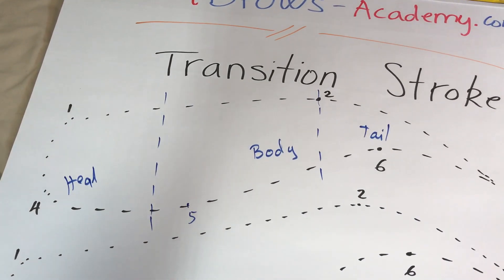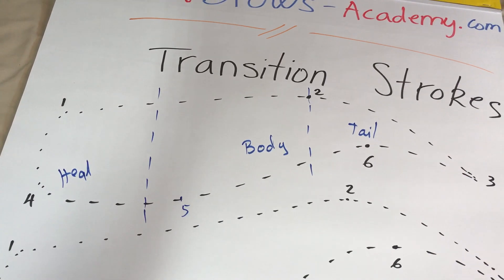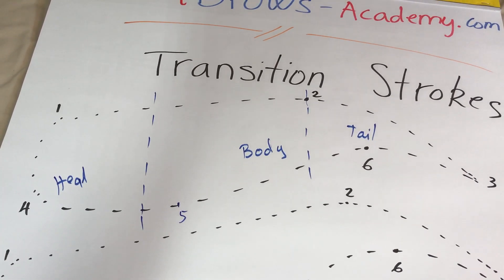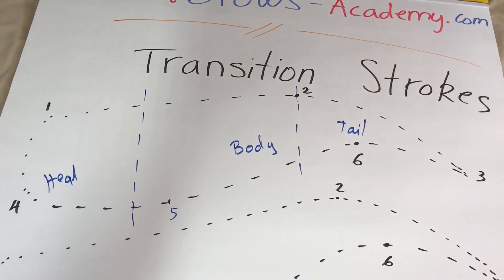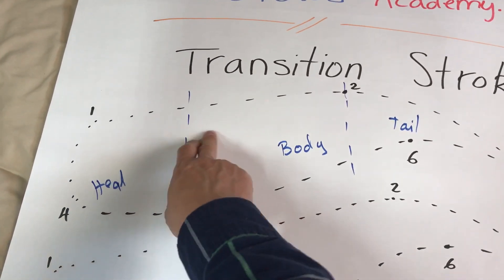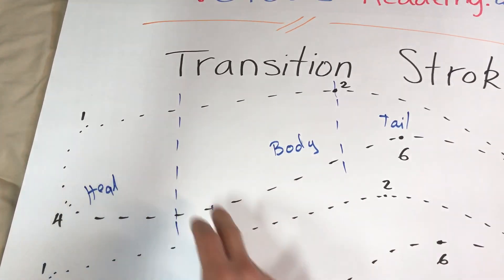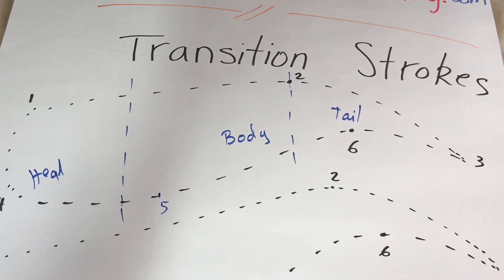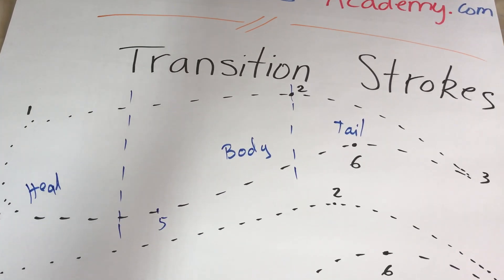In order to have a nice, beautiful and graceful head strokes area, you need to make sure that the last head stroke — in order to have a very nice transition stroke right here — the last head stroke has to be at least 20 degrees. It needs to have 20-degree inclination.